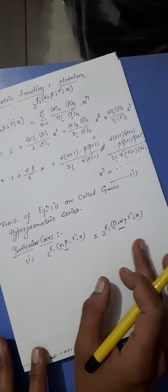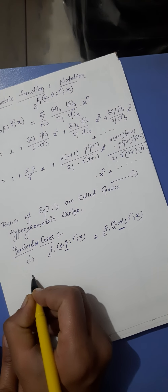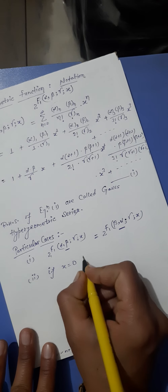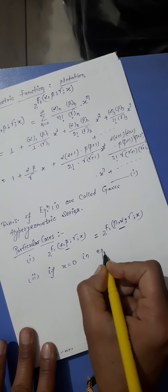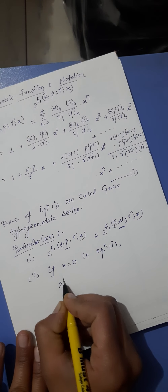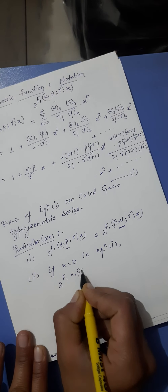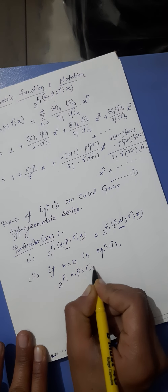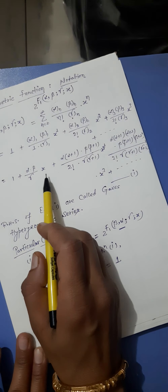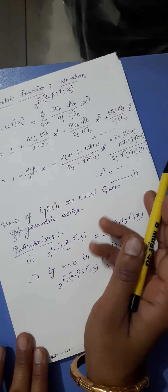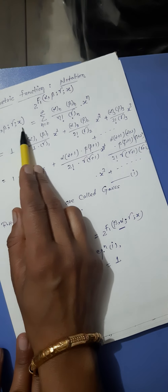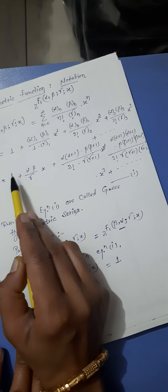If x = 0 in equation first, then 2F1(α, β; γ; x) = 1. When you put x=0, the second, third, fourth and all subsequent terms become 0, so 2F1(α, β; γ; 0) = 1.